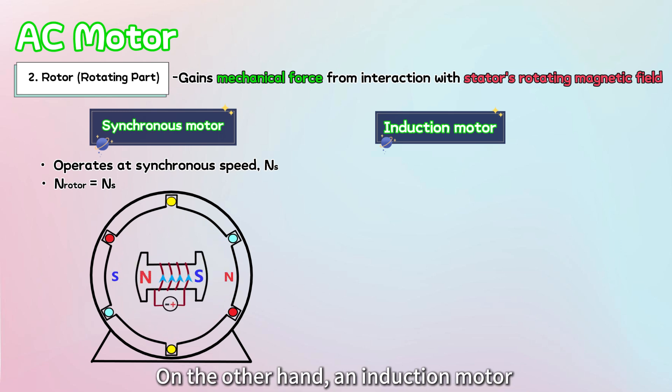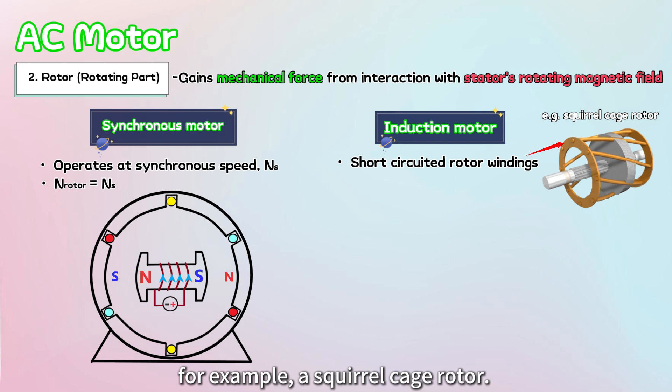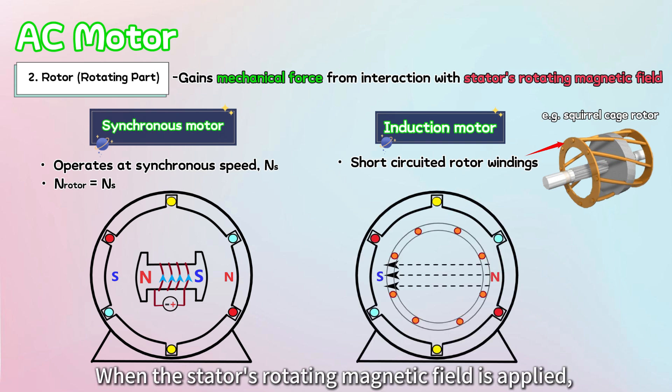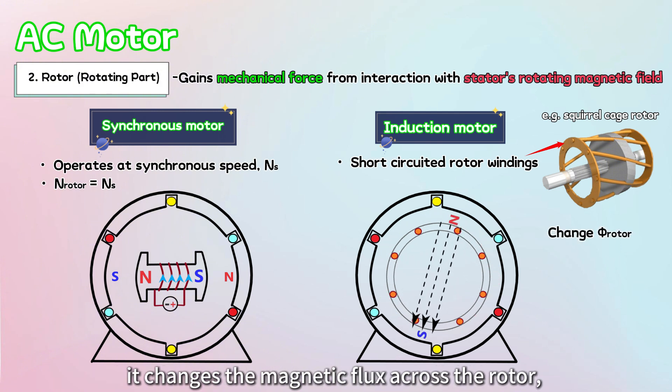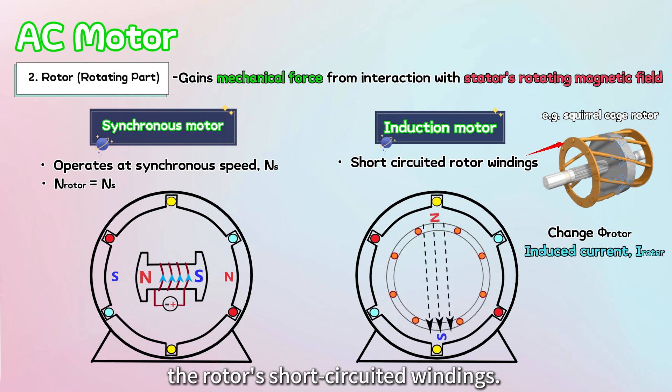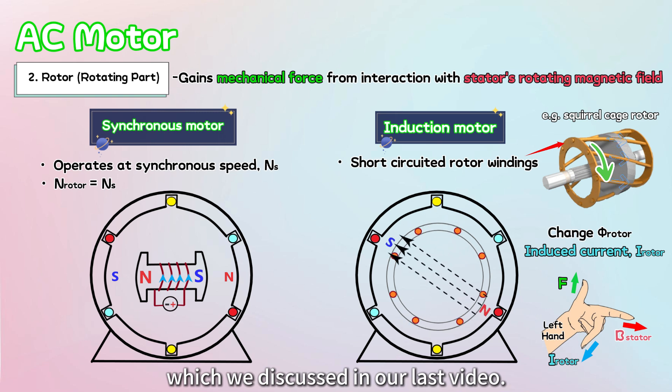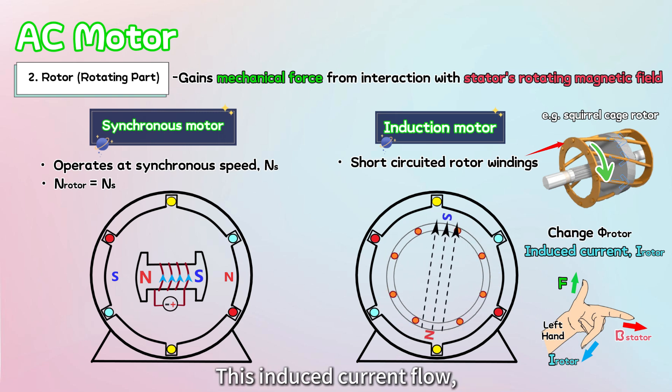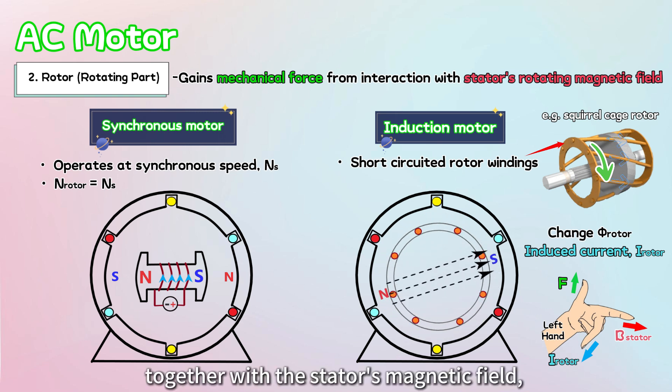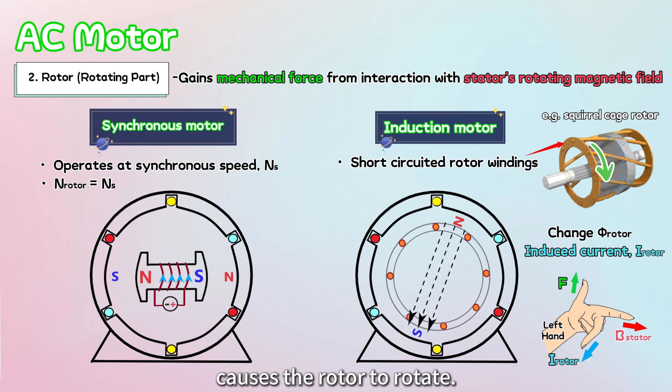On the other hand, an induction motor works a bit differently. Its rotor has short-circuited windings, for example, a squirrel cage rotor. When the stator's rotating magnetic field is applied, it changes the magnetic flux across the rotor, which in turn induces a current in the rotor's short-circuited windings. According to Fleming's left-hand rule, which we discussed in our last video, this induced current flow, together with the stator's magnetic field, generates the torque that causes the rotor to rotate.